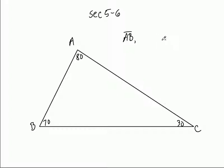Let's jump to the largest side — you look for the largest angle and then look opposite it, and that's BC. Then the middle one: if AB is the smallest and BC is the largest, the one left over is opposite the 70, and that would be AC. So this was inequalities — unequal sides in one triangle.